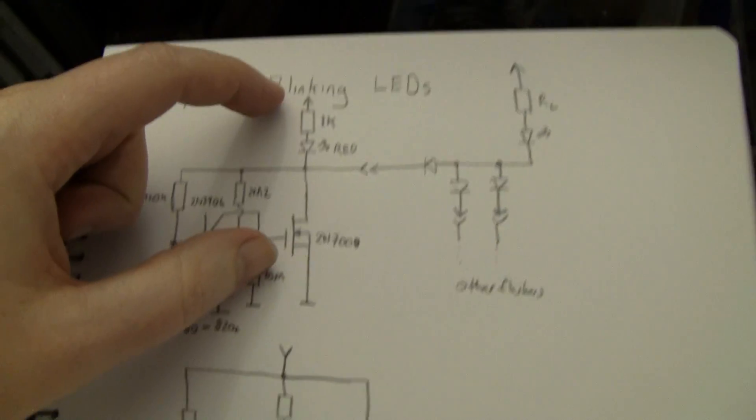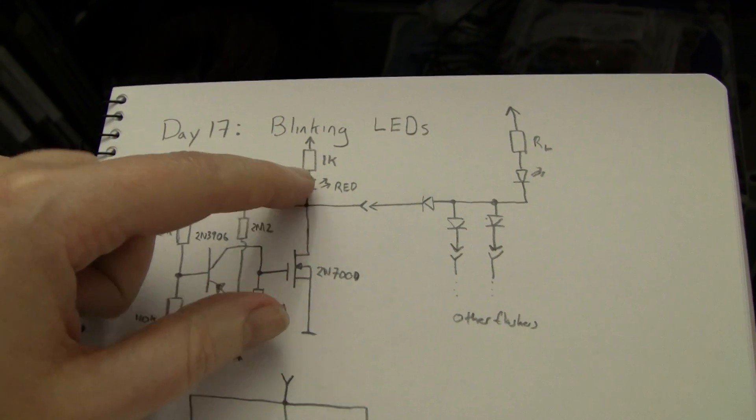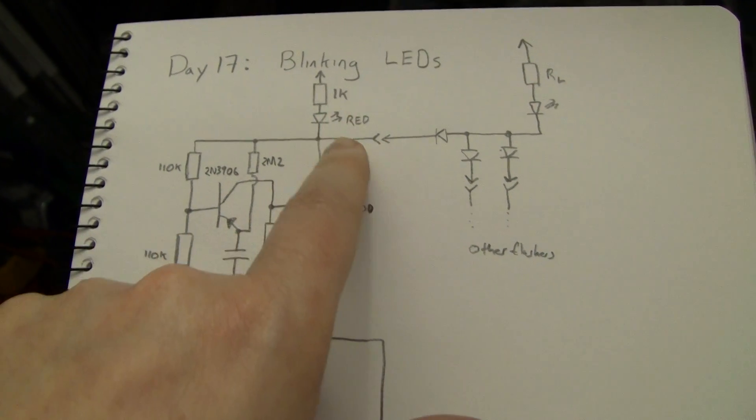It's important that the load has some kind of resistance in it otherwise it'll pull enormous amounts of current. In this case I've just used a 1K resistor.